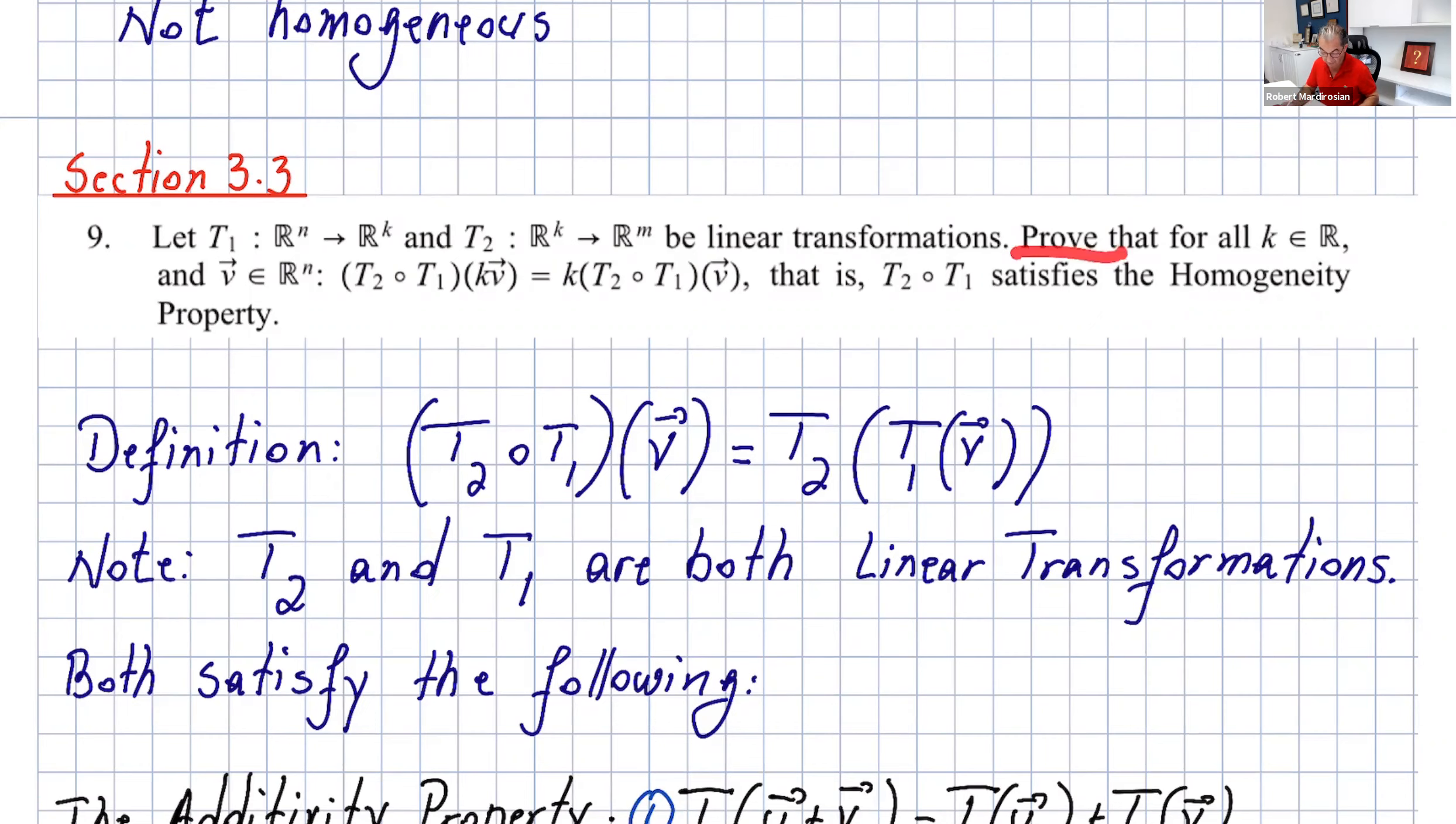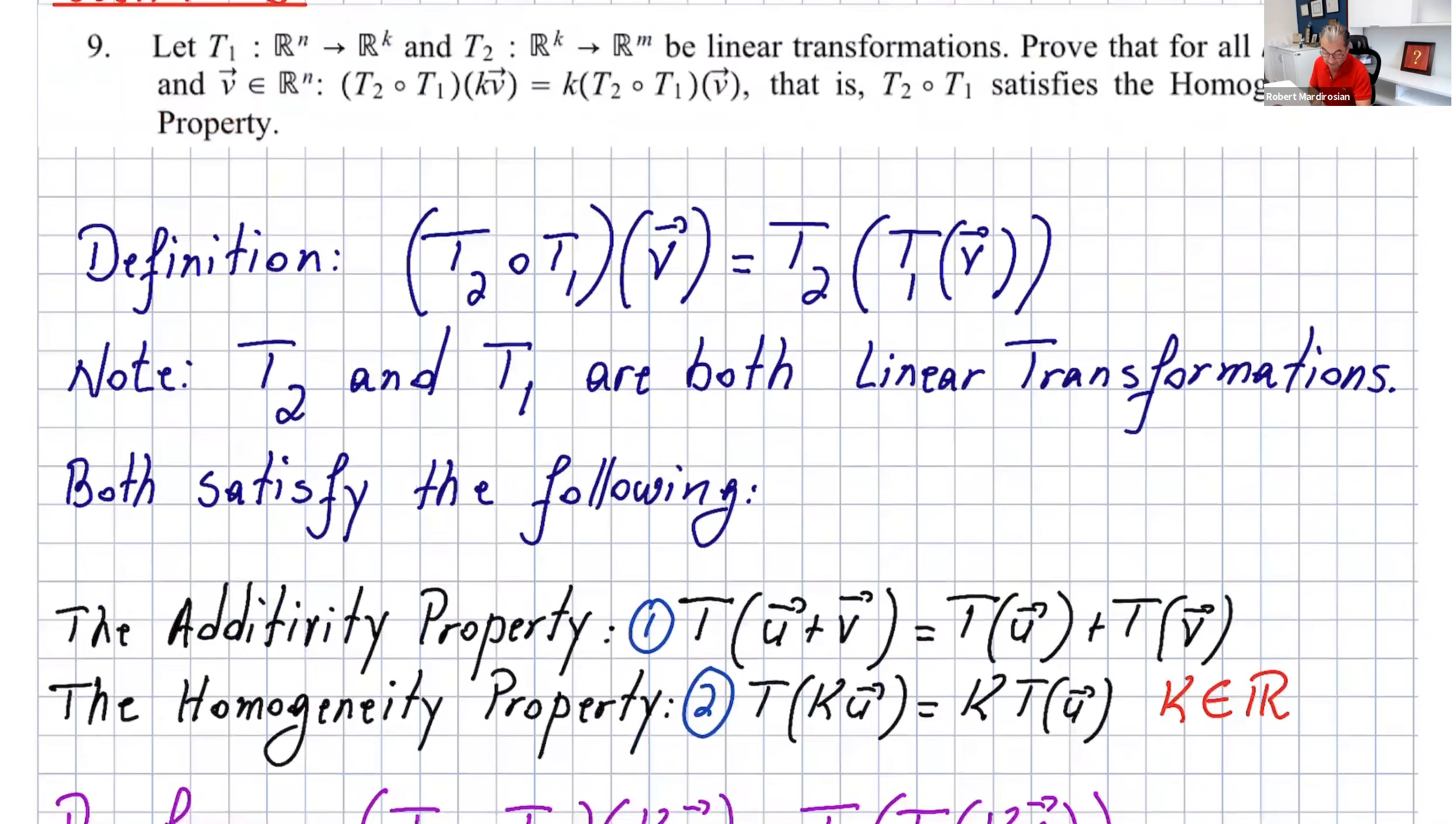It says proof. Let's start. We know by definition T₂∘T₁(v) is T₂(T₁(v)). That's also a vector but we don't have to write that. Let's use that definition. Again, I put the note: T₁ and T₂ are both linear transformations, so both satisfy the following.